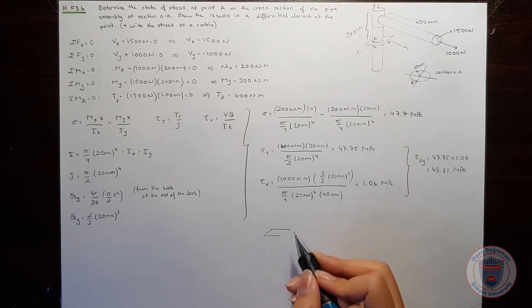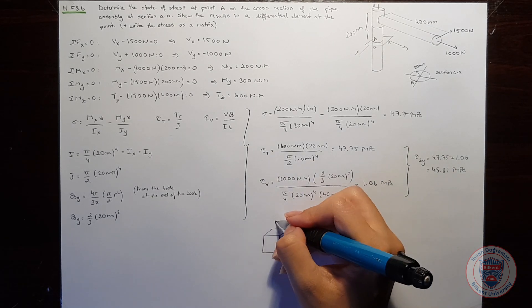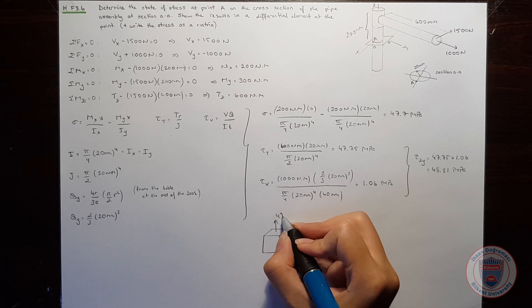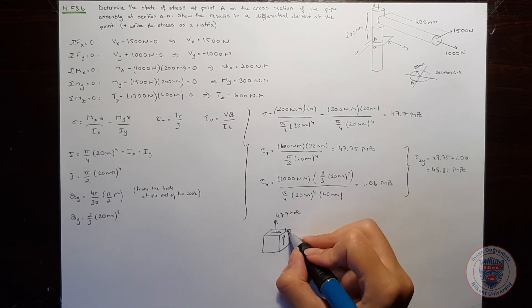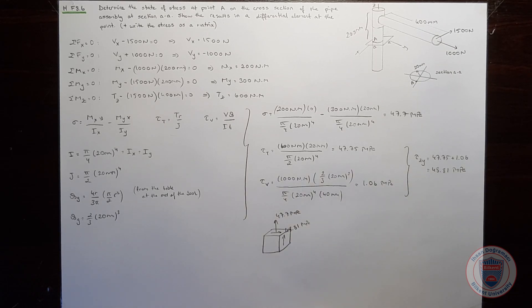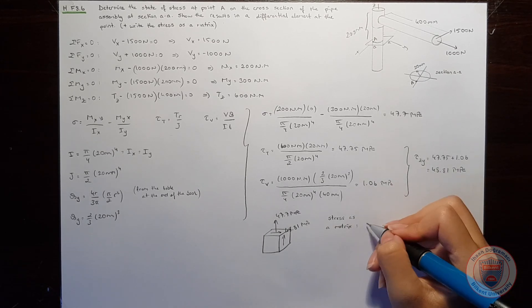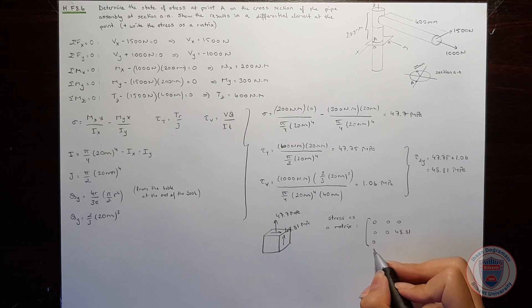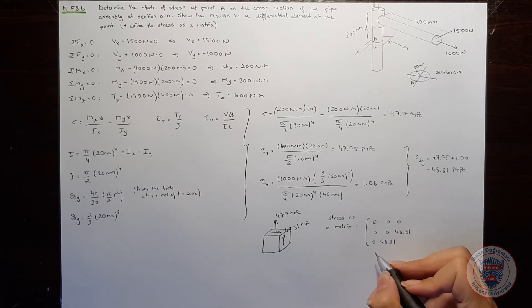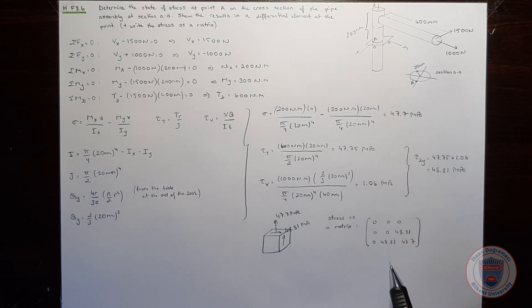We can show these stresses on a differential element. The normal stress in the z direction is 47.7 MPa and the shear stress in the Zy plane is 48.81 MPa. When we show these stresses as a matrix, it will include tau_YZ equal to 48.81 MPa, and sigma_Z equal to 47.7 MPa. The other normal and shear stresses are zero.